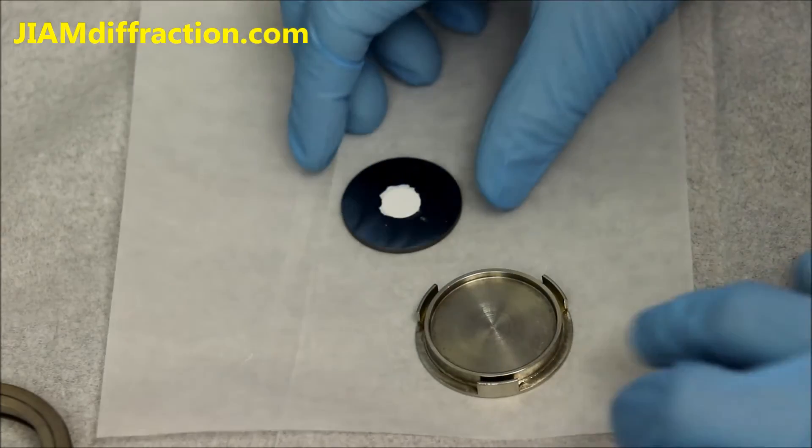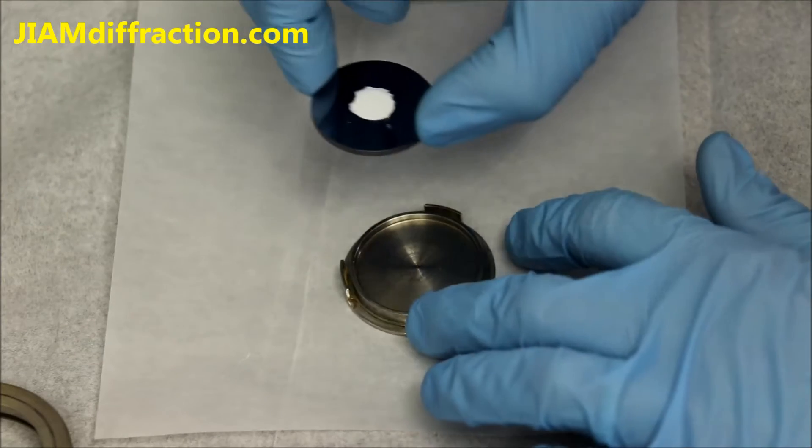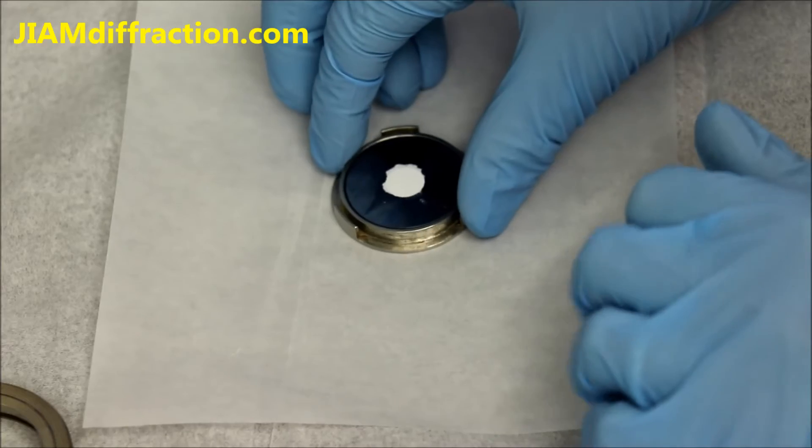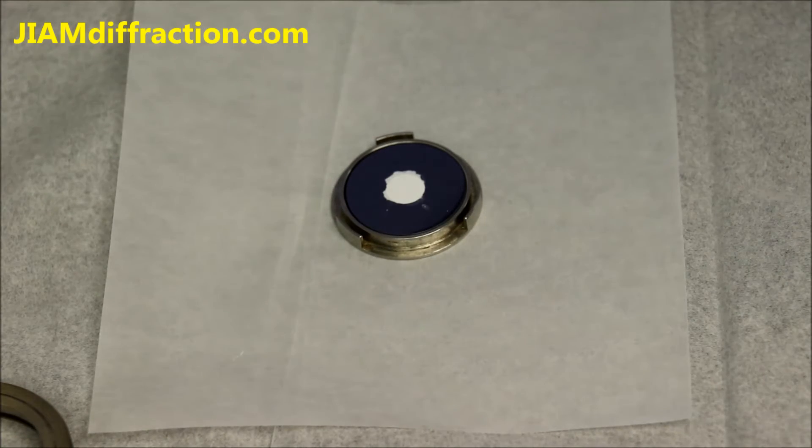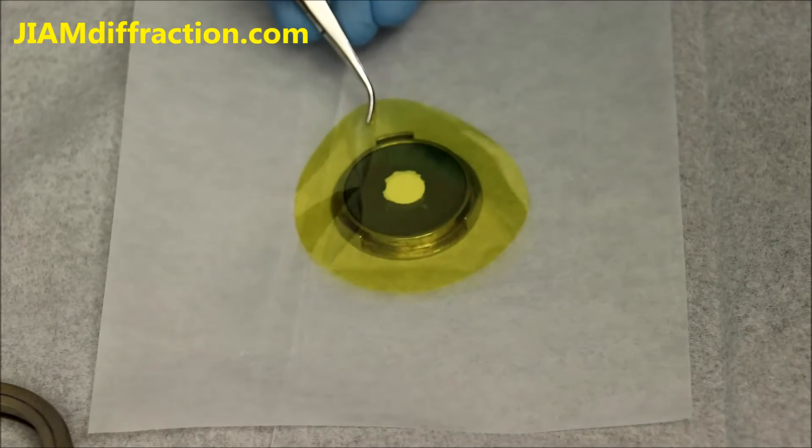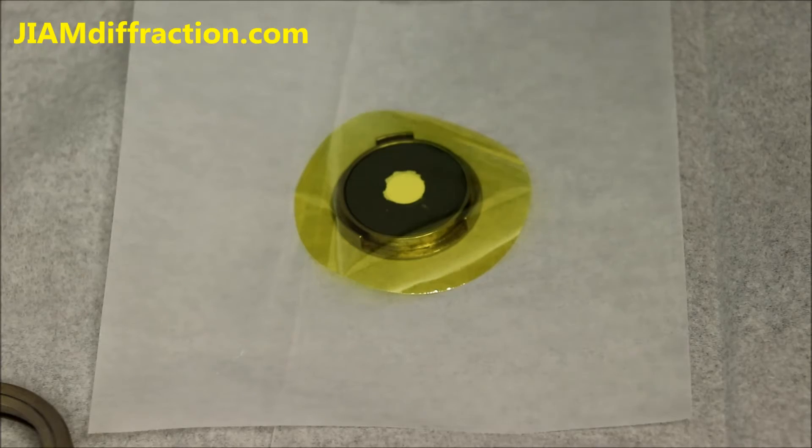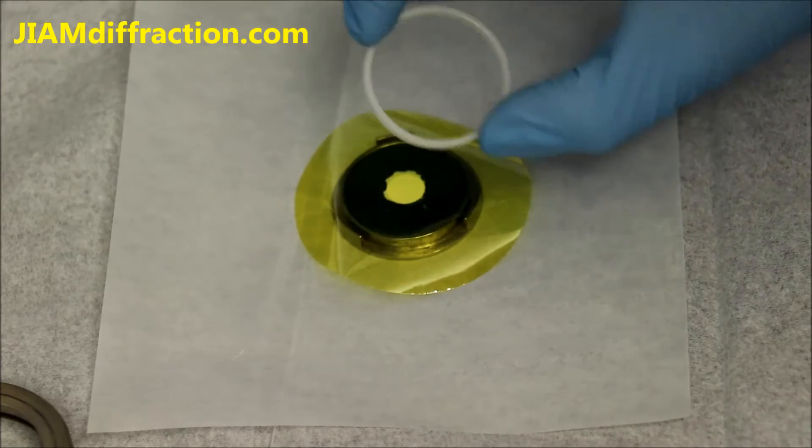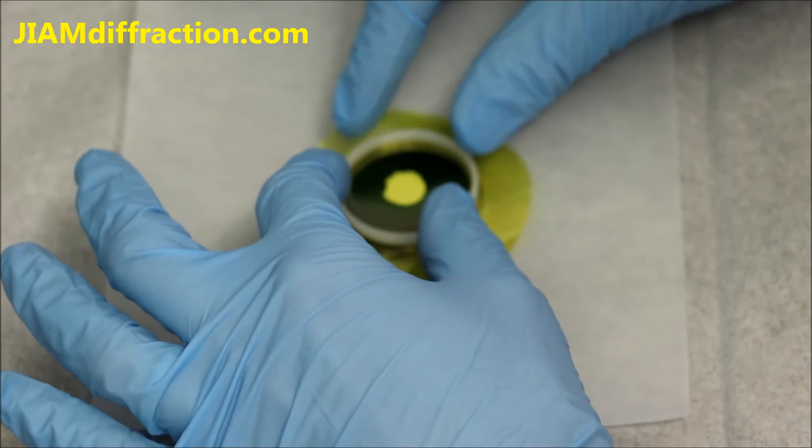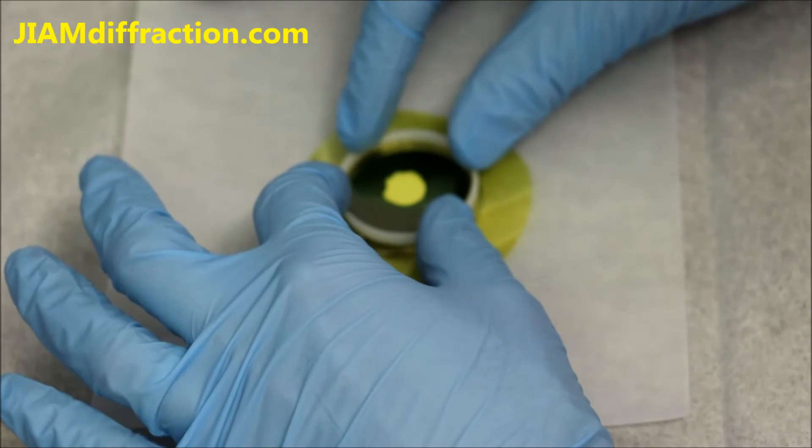So next we take this other piece and set the one we already prepared inside. We then take a piece of Kapton film which I have off camera and place it over the sample. We then take this ring, place it on top and then evenly press down.